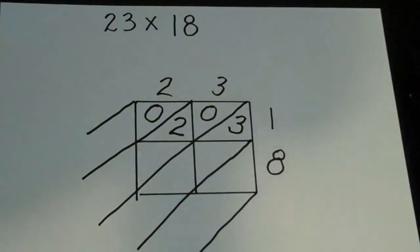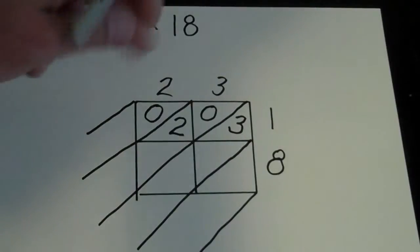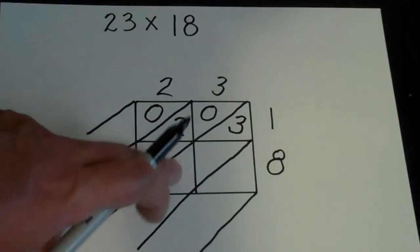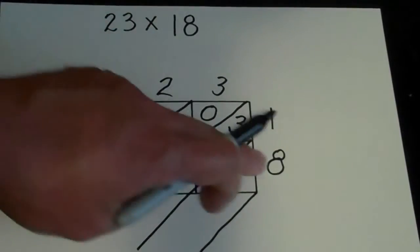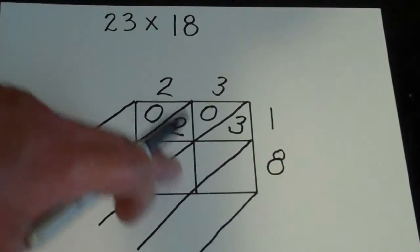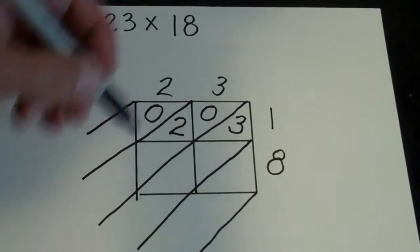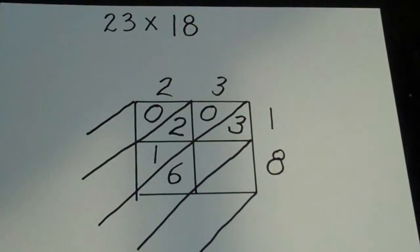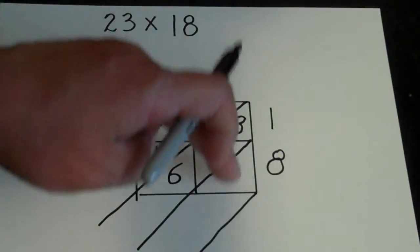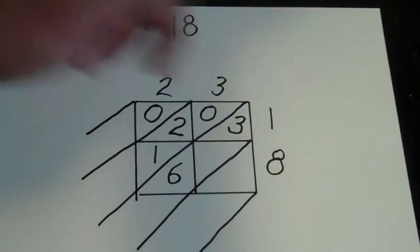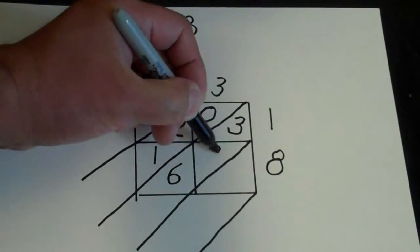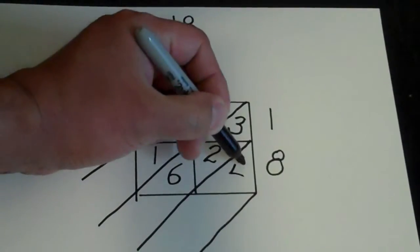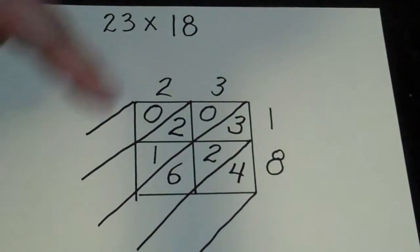Okay, now I'm gonna go down to the bottom. So now in this lower left I'm gonna multiply 2 times 8, and my answer will go in these two triangles, so 2 times 8 is 16, so I put a 1 and a 6. And then I'll come down here for the lower right, that's gonna be 3 times 8, which is 24, so 2 goes here and 4 goes there.